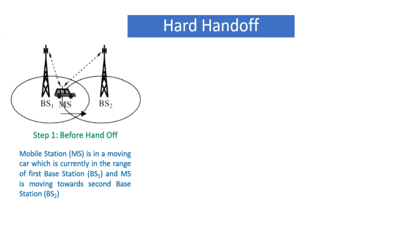There are two types of handoff: hard handoff and soft handoff. Now we are discussing hard handoff. As the diagram shows, there are two base stations BS1 and BS2. Step 1 — before handoff: the mobile station is in a moving car which is currently in the range of the first base station BS1 and is moving towards the second base station BS2.